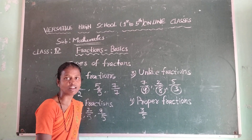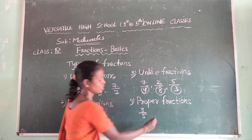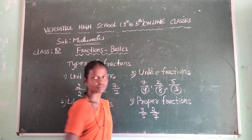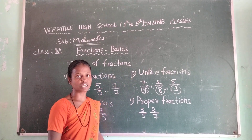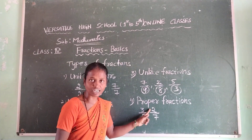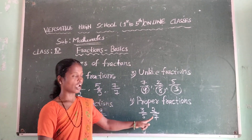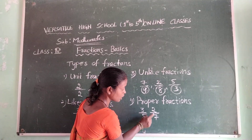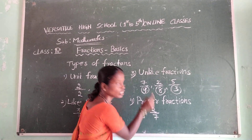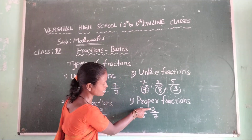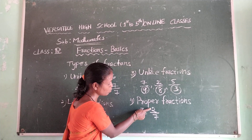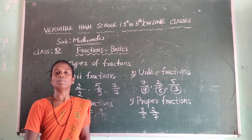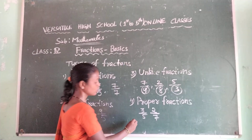Say one example — Nihal, are you listening to my class? Say two by seven. Here, two is the numerator and seven is the denominator. Observe that the numerator is less than the denominator — two is less than seven. So this type of fractions are called proper fractions.